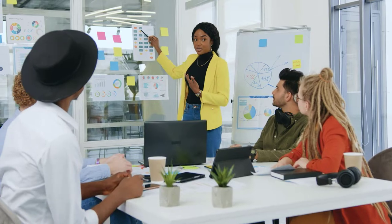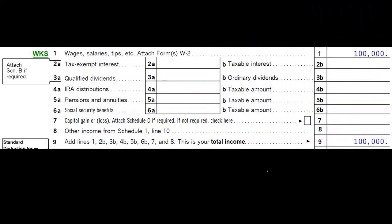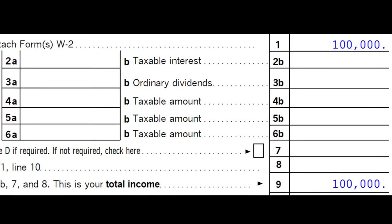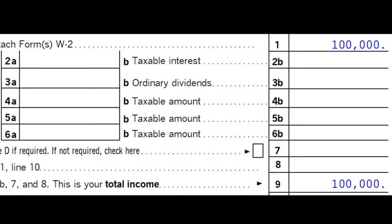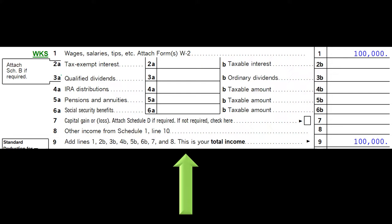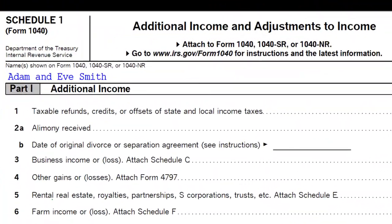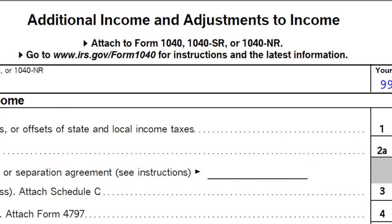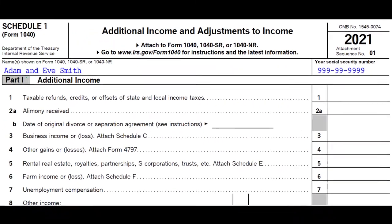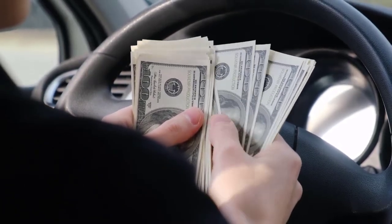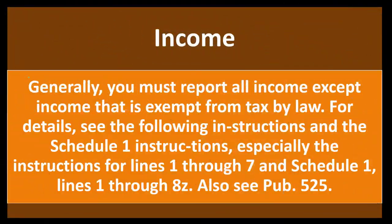The primary area where income is reported is the first page of Form 1040. Line one is the most common form — wages — but there are many other income forms that feed into this first page of the 1040, along with sub-schedules. Schedule 1 is where we have additional income and adjustments that feed into page one of the 1040, providing more income line items.